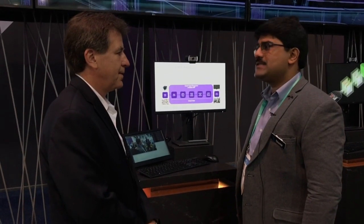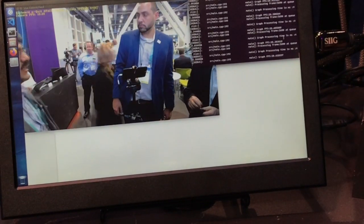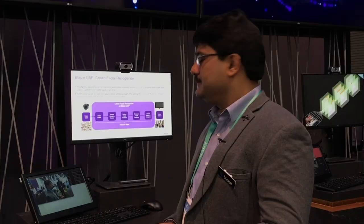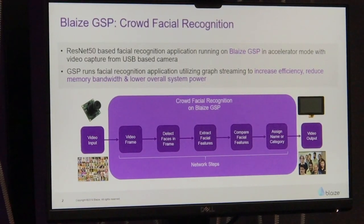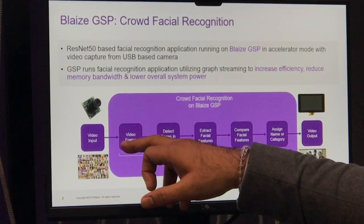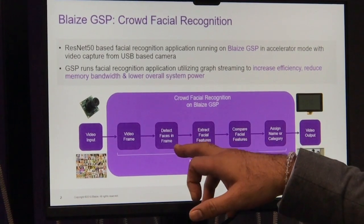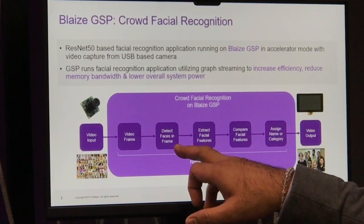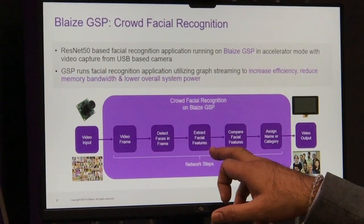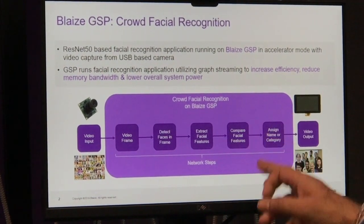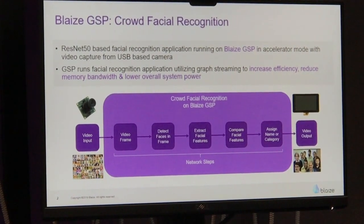What we are showing here is a face recognition demo. This can be applied in several market segments — for example, anything related to smart vision, such as security surveillance. How this demo works: we capture an input from the camera. Video is a series of frames, and we try to detect faces — that's the object detection stage, where the objects are faces. Once faces are detected, we extract the facial features, and that's where the 126 points on the face come in. We compare those features with the database we already have, and if a match is found, we flag the name.